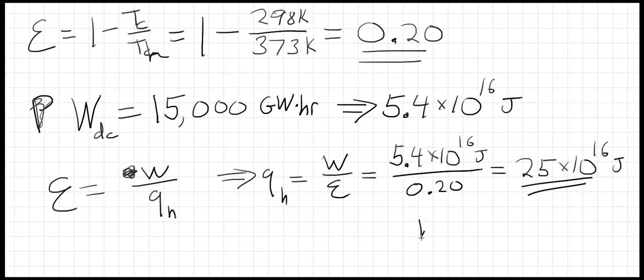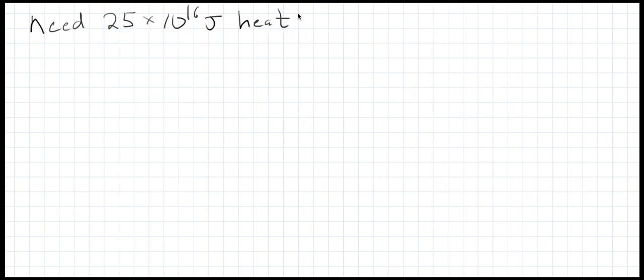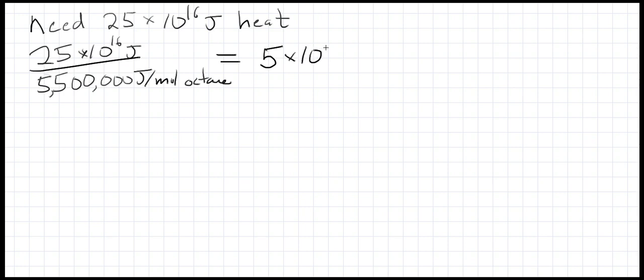This is going to be the heat supplied by burning octane, and this is a good approximation for burning gasoline. So we need 25 times 10 to the 16th joules of heat. We saw earlier that octane had a heat of combustion of around 5500 kilojoules per mole. Let's put that in terms of joules per mole of octane. This gives us around 5 times 10 to the 10th moles of octane.